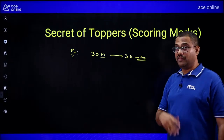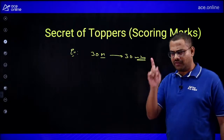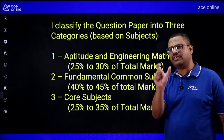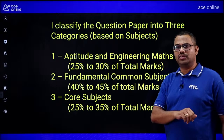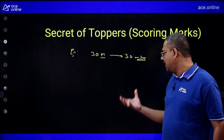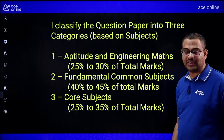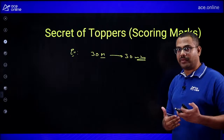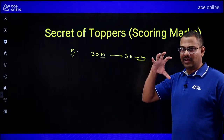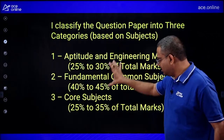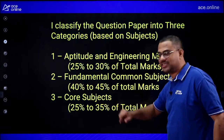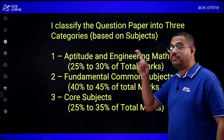Strategy: read aptitude and math daily — one hour every day. Then spend more time on fundamental common subjects like Networks, Controls, Analog, and Digital — these give 40 to 45% of marks. Finally, approach the core subjects. On the exam day, attempt easy questions first, then complex ones strategically. The goal is to score maximum marks by attempting the complete paper. Spending proportional time: 1 hour on Category 1, 2–3 hours on Category 2, and 4 hours on Category 3 daily.